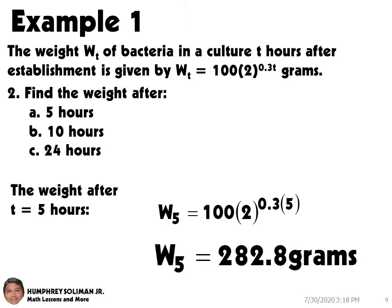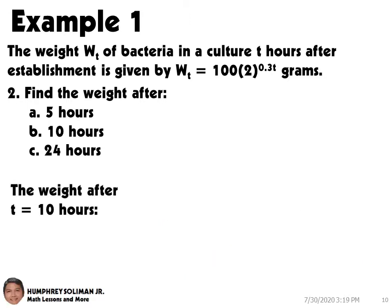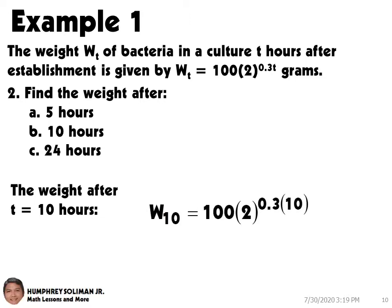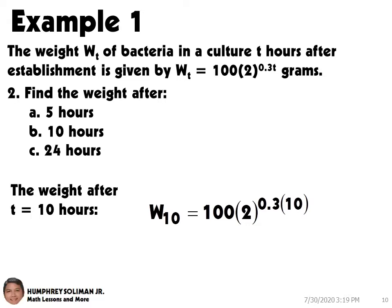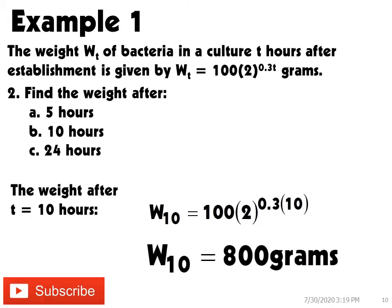Next, in number 2b, the weight after 10 hours is when t equals 10. So if we substitute t equals 10 in the equation used to model the weight of the bacteria, we will get W10 equals 100 times 2 raised to 0.3 times 10. Therefore, the weight after 10 hours is W10 equals 800 grams.